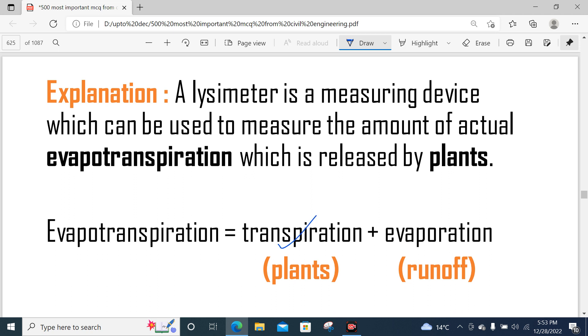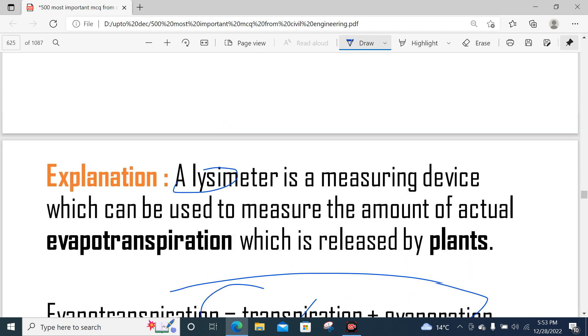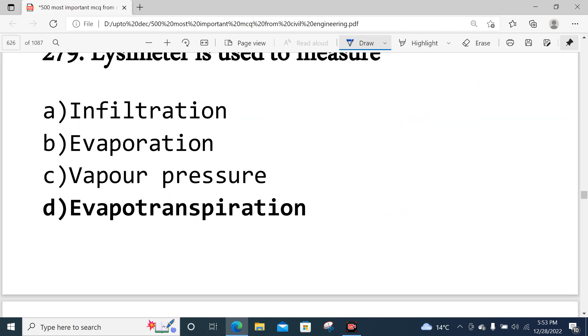Evapotranspiration is transpiration from plants plus evaporation. So this is the correct option, option number D.